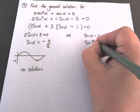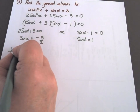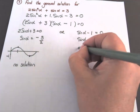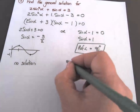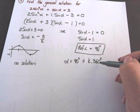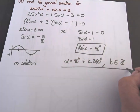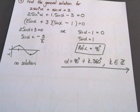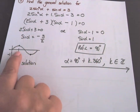The next part: sin alpha equals 1. Where is sine equal to 1? At 90 degrees. So the reference angle is 90 degrees, and alpha equals 90 degrees plus k times 360 because 360 is the period of sine. And k is an element of Z. We only have one solution.